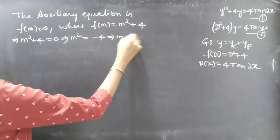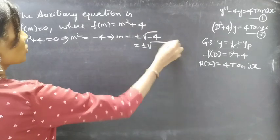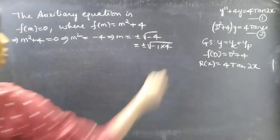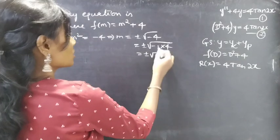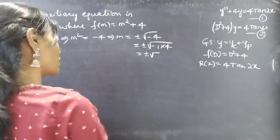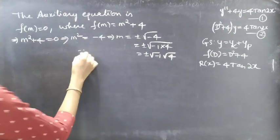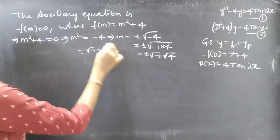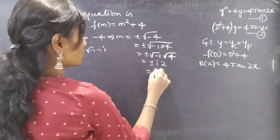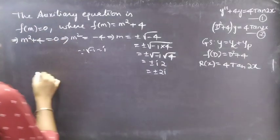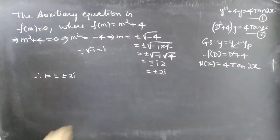From m² + 4 = 0, we get m² = −4, so m = ±√(−4) = ±√(−1 × 4) = ±√(−1) × √4. Since √(−1) = i, we get m = ±i × 2, or m = ±2i. Therefore m = ±2i, which are complex conjugate roots.